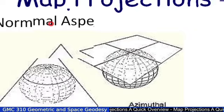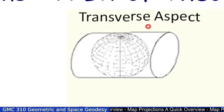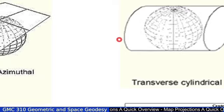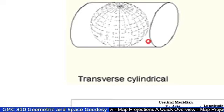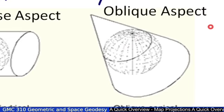There's a normal aspect. There's a transverse aspect. In other words, the axis of the cylinder or the cone is perpendicular to the axis of rotation. And the plane sits on the equator. And then any other orientation or any other aspect we call oblique.